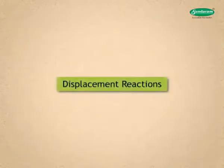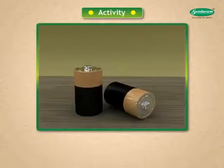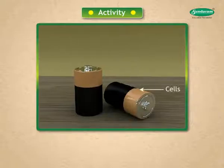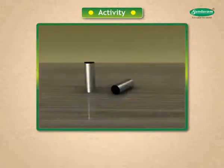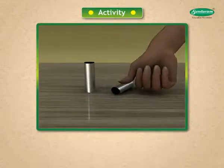Let us take a look at the next type of reaction: displacement reaction. Take completely used cells out of a wall clock, transistor, tape recorder, etc. Remove the material from inside — you will get a can that is made up of zinc. Press and make it flat, then cut into 2 strips.